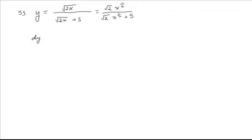Now when we go to take our derivative, this is going to be a quotient rule. First off, we have the denominator being left alone, which is square root of 2 times x to the 1 half plus 5, times the derivative of the numerator. The square root of 2 is just a constant, times the derivative of x to the 1 half, which is 1 half x to the minus 1 half — that's just our power rule.